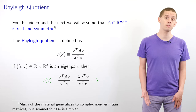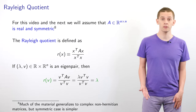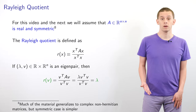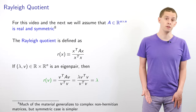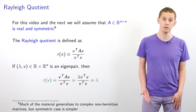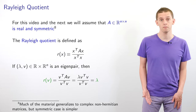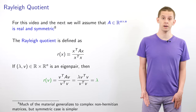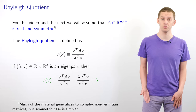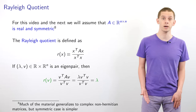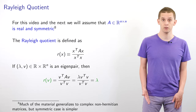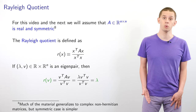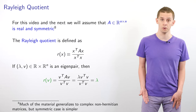Why is this a useful definition for eigenvalue analysis? Suppose that lambda and v are an eigenpair of A. Then R(v) equals v transpose Av divided by v transpose v, and since Av equals lambda v, this simplifies to lambda times v transpose v divided by v transpose v, which gives us lambda. So for any eigenvector of A, the Rayleigh quotient gives us the corresponding eigenvalue.